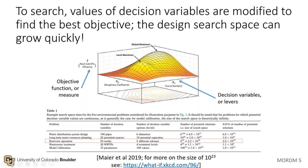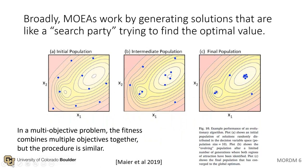There are lots of analogies for how evolutionary algorithm optimization works. One is the search party analogy: in panel A, you see an initial population with search party members evenly distributed throughout the space. Some of them are closer to the optimum and some further away — they don't know where the optimum point is. You can see the optimum point is where the circles close in on themselves.